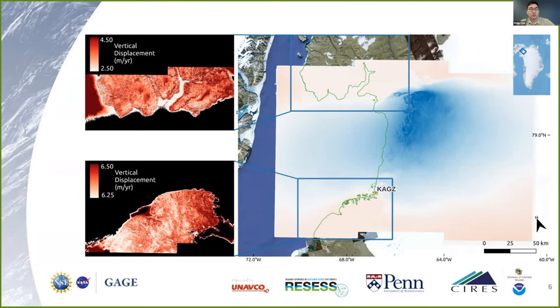By zooming into specific scales, we can see localized changes on the order of about centimeters, with these signals likely coming from proglacial river systems, valleys, fjords, etc.